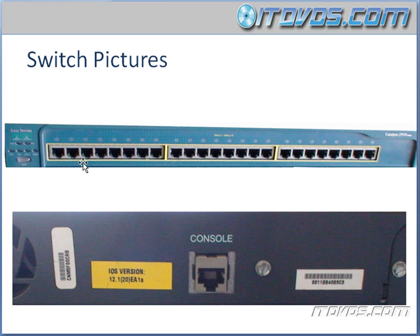Each port on a switch is a new collision domain. Here we have our switch, and each one of these ports is a new collision domain. So if we have computers plugged into each port — all the ports filled up — each computer is in its own collision domain. You aren't going to have any collisions, because in order to have a collision two computers have to be in the same collision domain, and with a switch they aren't. So we could have all the ports filled up connected to many different computers and we wouldn't have any collisions. All the hosts could actually transmit at the same time and we still wouldn't have any collisions. That's definitely not the case with a hub — we would have all sorts of collisions.